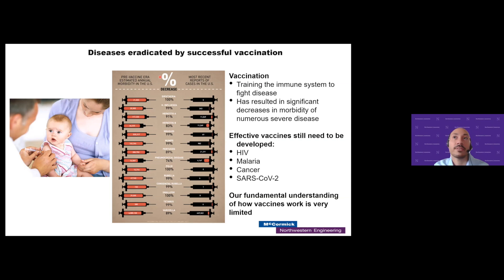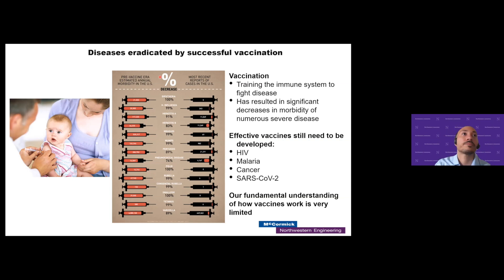Vaccines have had a significant effect on reducing the amount of death and morbidity across the human population, but there are still some issues. There are a lot of vaccines that we cannot develop — in particular, notable ones are HIV, malaria, and now we're trying to develop ones for COVID-19. Why can't we make some of these vaccines? Why does it take so long? That really comes down to a fundamental understanding of how vaccines work. Today I'm going to talk about the immunology behind vaccines and how that can help us better understand vaccination, which can allow us to better design vaccines in the future and potentially make them faster.